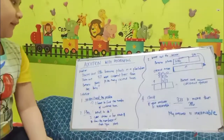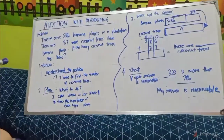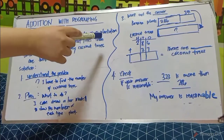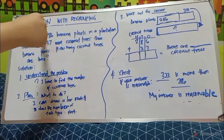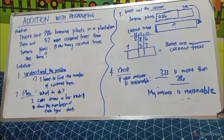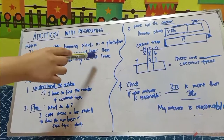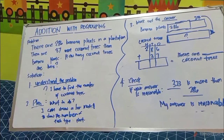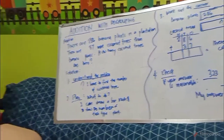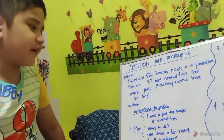For my example problem: there are 286 banana plants in the plantation and there are 37 more coconut trees than banana plants. How many coconut trees are there?